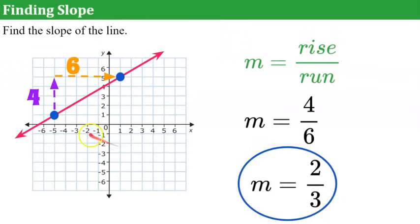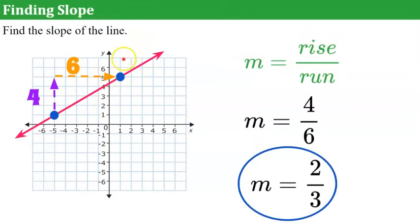Now watch: using the simplified slope of 2/3, if I rise 2 and run 3 from a point, I land on the line. Rise 2, run 3 — on the line. Rise 2, run 3 — on the line. This works every time if you've found your slope correctly. It's like making a staircase on your line.